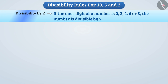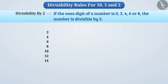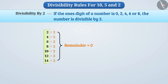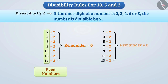Now let's talk about the divisibility rule for 2. This rule tells us that if the ones digit of a number is 0, 2, 4, 6, or 8, the number is divisible by 2. When numbers such as 2, 4, 6, 8, 10, 12, 14, etc. are divided by 2, they give remainder 0 — such numbers are even numbers. But when numbers 1, 3, 5, 7, 9, 11, 13 are divided by 2, they do not produce remainder 0 — we call such numbers odd numbers.